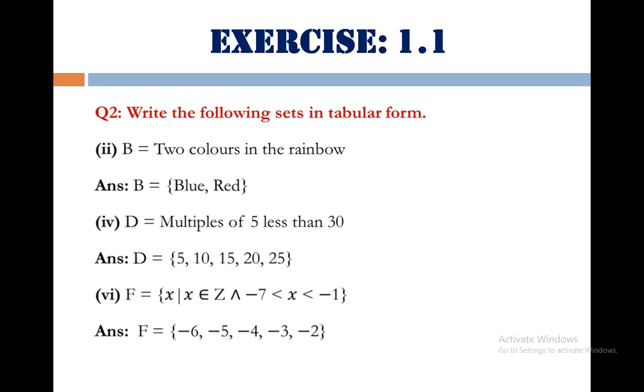Part number 4, D equals multiples of 5 less than 30. This is very easy, you have to count multiples of 5 and you have to stop before 30. Answer is 5, 10, 15, 20, 25.